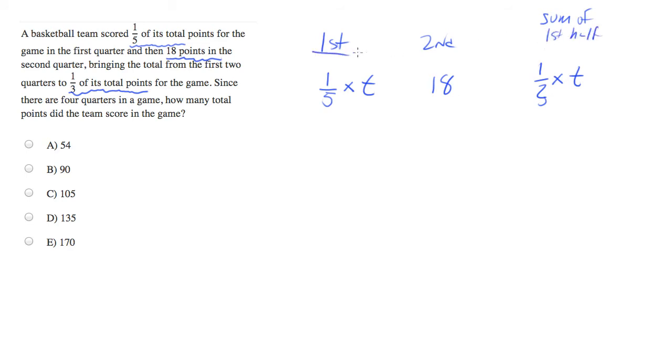You notice I'm not using the same label they gave me in the problem. This is one thing they're trying to do to confuse you. It says the total from the first two quarters, notice this is a different total than total points in the game, which I'll put in blue right here. They use the word total twice, but it's really two different numbers, so I'm switching to call this sum of the first half.